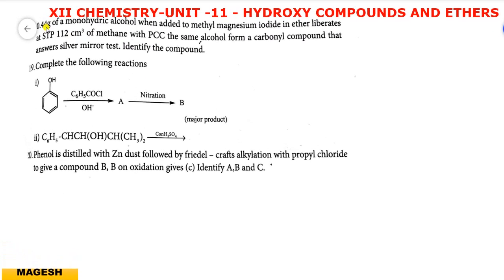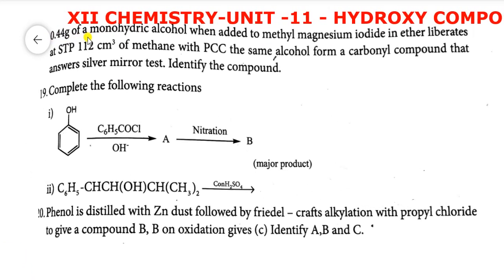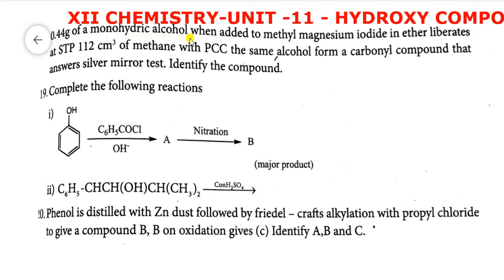See the 18th question: 0.44 gram of monohydric alcohol when added to methyl magnesium iodide in ether liberates at STP 112 centimeter cube of methane. With PCC, the same alcohol forms a carbonyl compound that answers silver mirror test. Identify the compound.